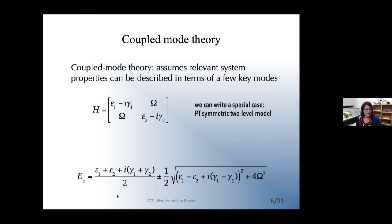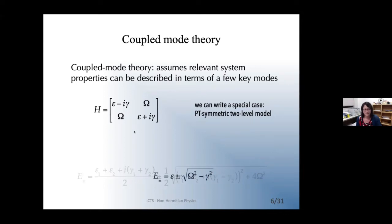As a special case, we can write a PT-symmetric version of this model by changing the modes so that one is lossy and one is a compensating gain mode with plus i-gamma. The eigenvalues in this case are simple: when gamma is less than omega they're both real, when gamma is greater than omega they are complex, so gamma equals omega is the exceptional point — associated with PT symmetry breaking.